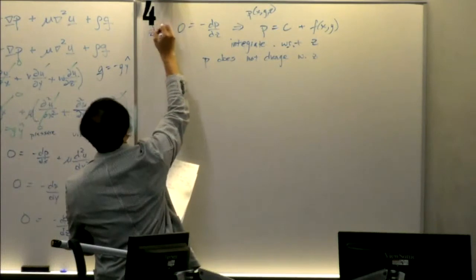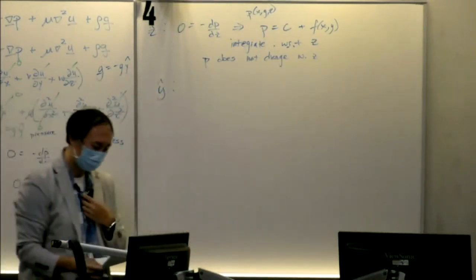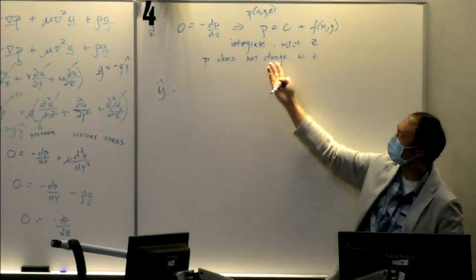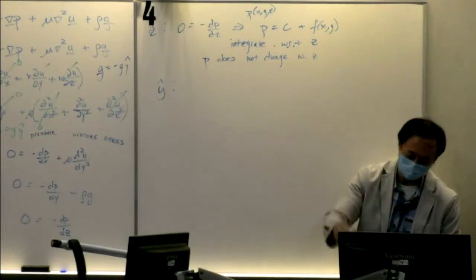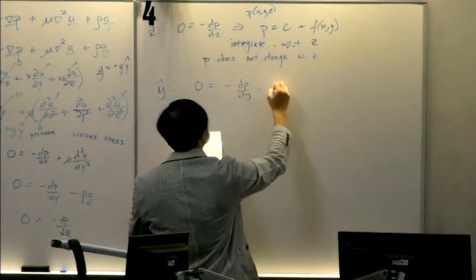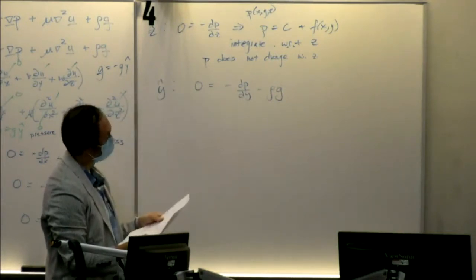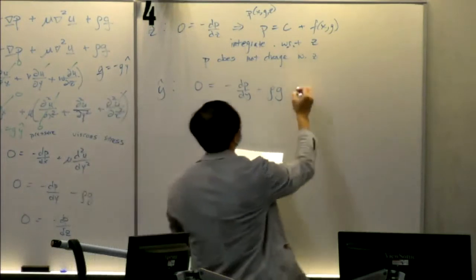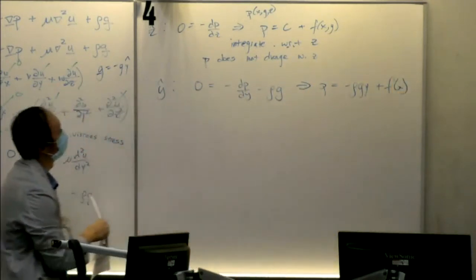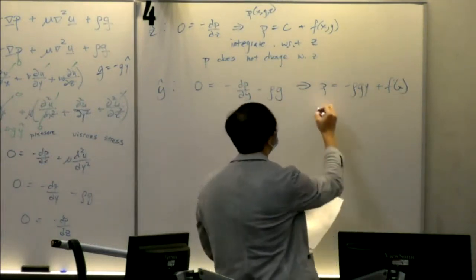Now let's do the y-hat equation: zero equals negative dp/dy minus rho g. This might bring back memories from quiz two — this is basically Pascal's law; it tells you how pressure varies hydrostatically. Integrating, you get p equals negative rho g y plus a function of x. As y becomes increasingly negative, pressure goes up. This just says pressure varies hydrostatically, except for this function of x.